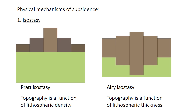Lithosphere is also like an iceberg floating on the asthenosphere — some of it sticks down into the mantle and some sticks up. Thicker sections of lithosphere have a deeper root but also a higher surface elevation. So changes in the thickness of the crust, or changes in the density of the crust, can affect surface topography and therefore lead either to subsidence or to uplift.